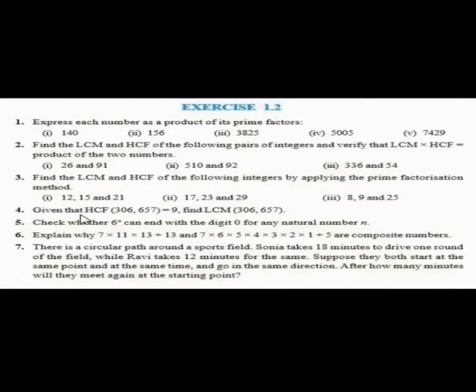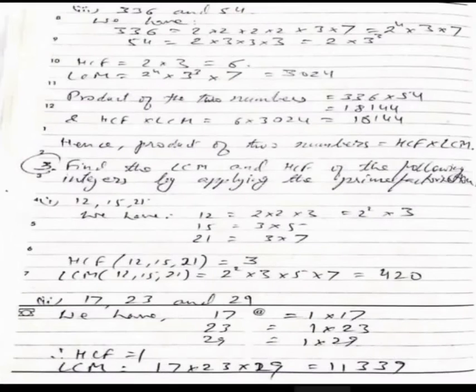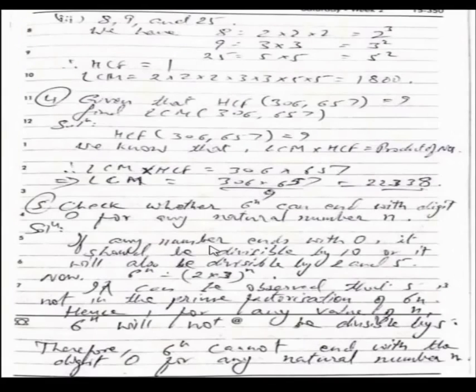Fourth question is: given that HCF of 306 and 657 is equal to 9, find the LCM of 306 and 657. This means HCF of 2 numbers is given, so we have to find its LCM. We will use LCM into HCF is the product of 2 numbers, so we will use that thing here.